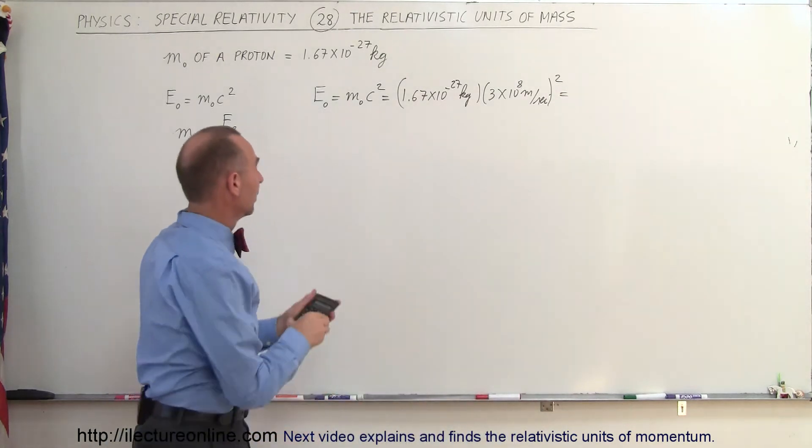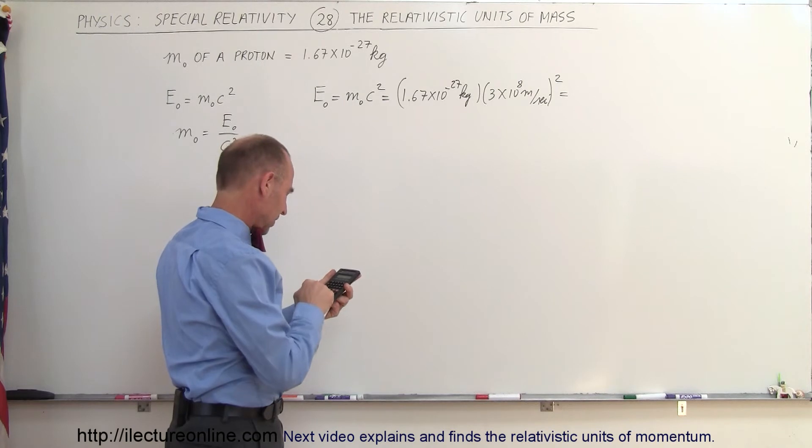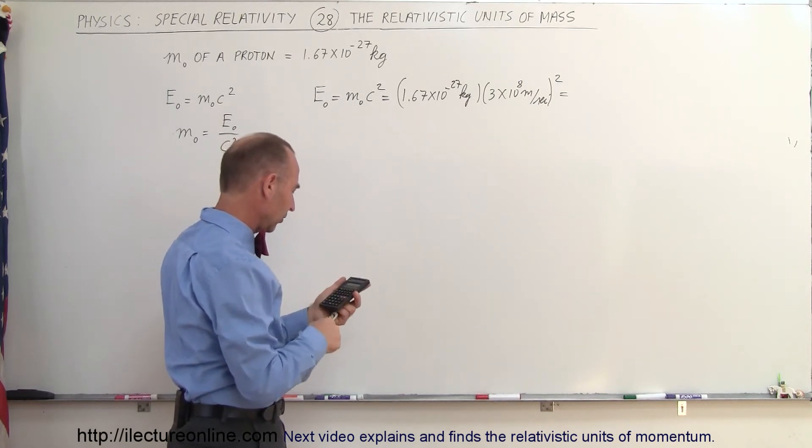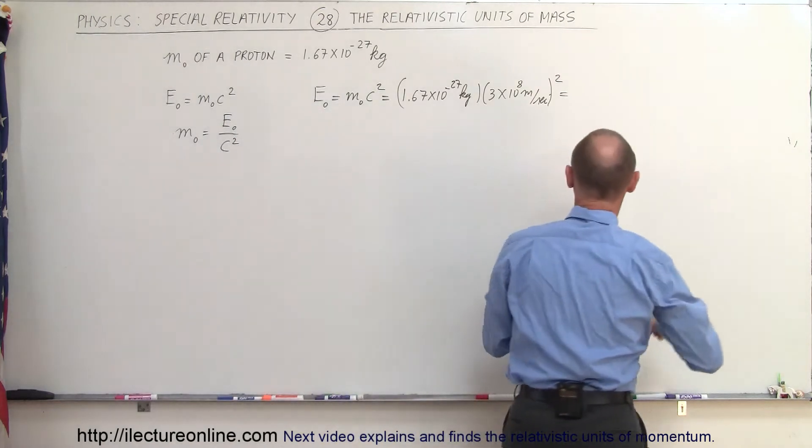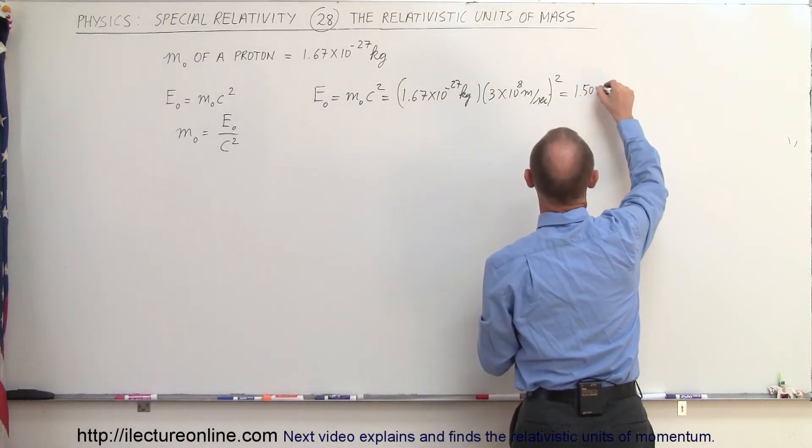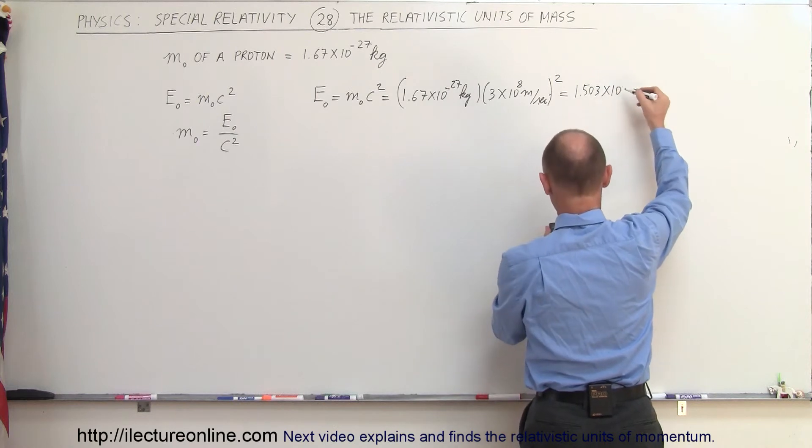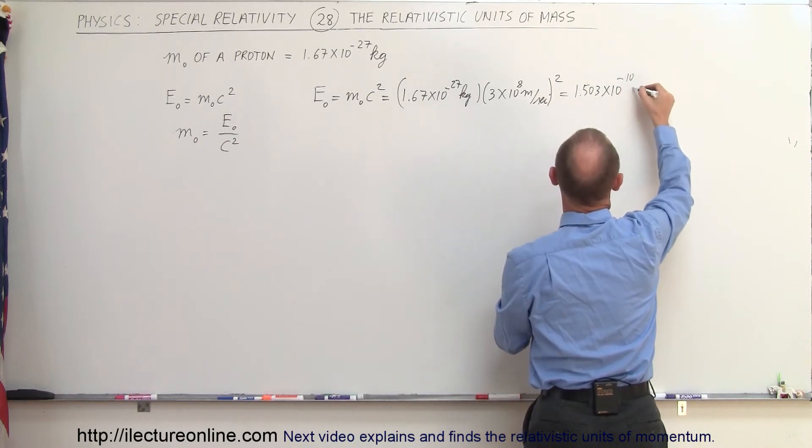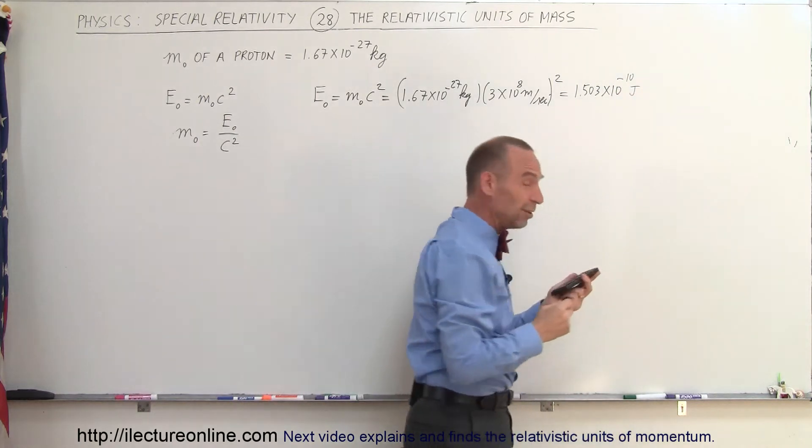So with the calculator, we get 1.67 E to the minus 27 times 3 E to the 8 squared equals, so we get 1.503 times 10 to the minus 10, and that would be joules. The energy, of course, would be joules.